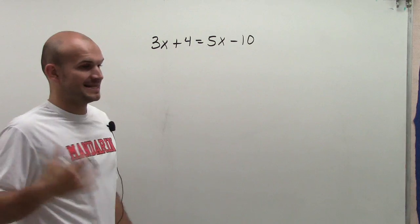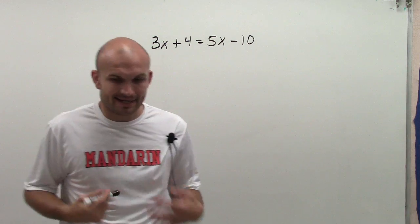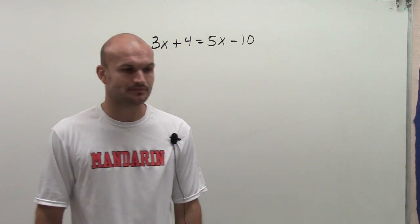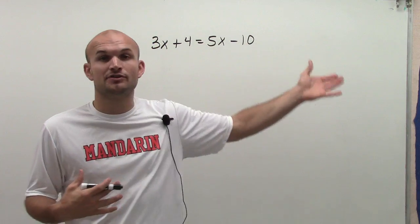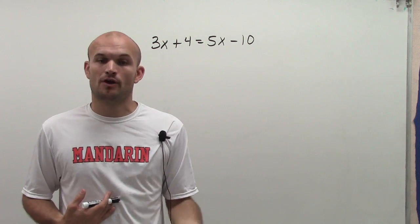So I have a variable on both sides. I need to get them on the same side. And here's just my little advice to you. I personally don't really care if the variable's on the left or the right side. I always like to get rid of the smaller variable.